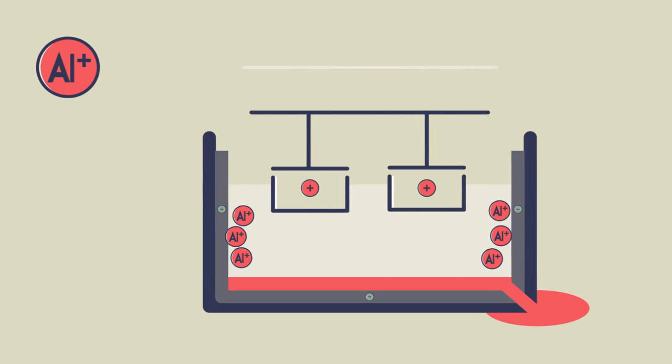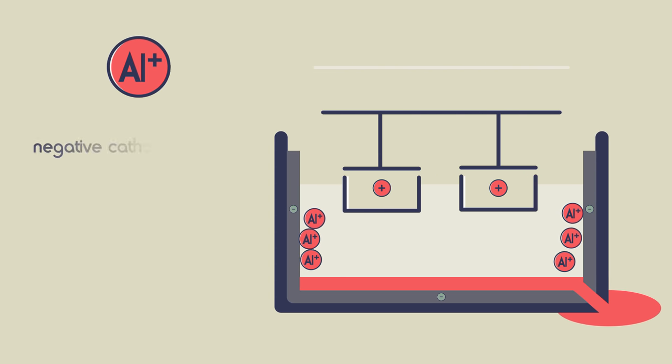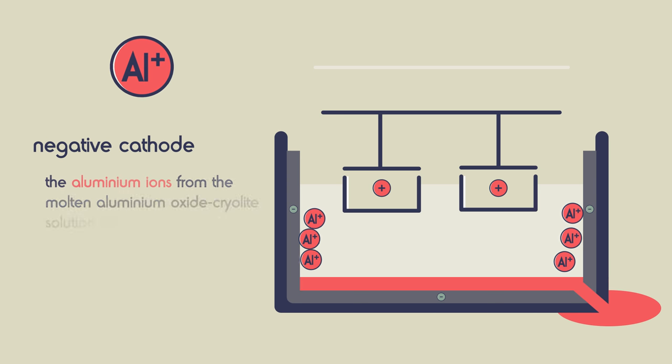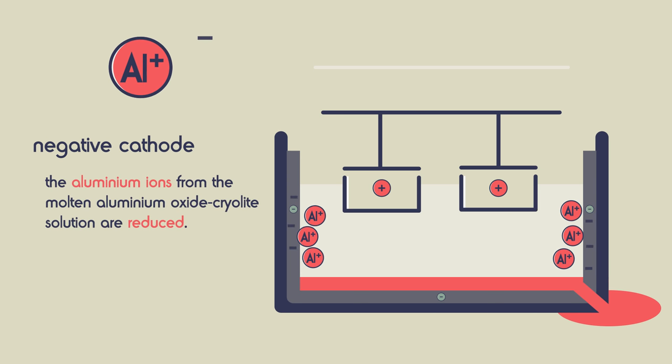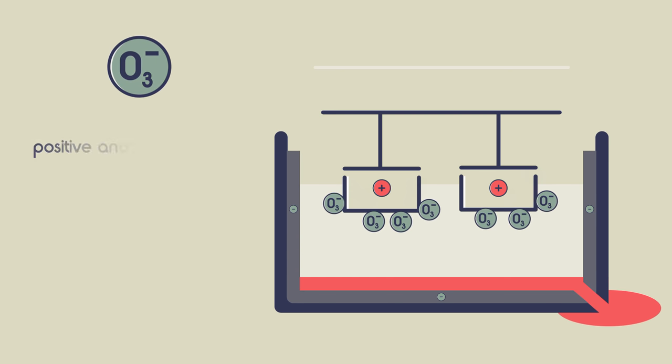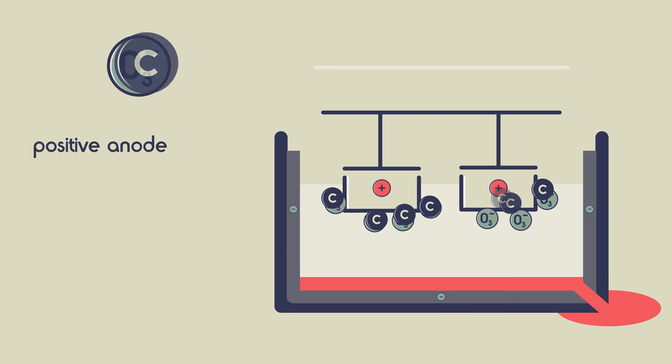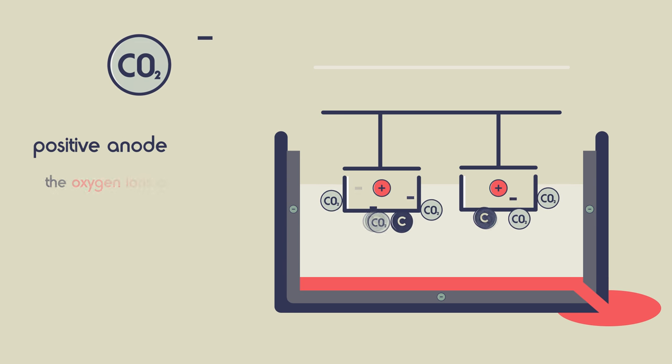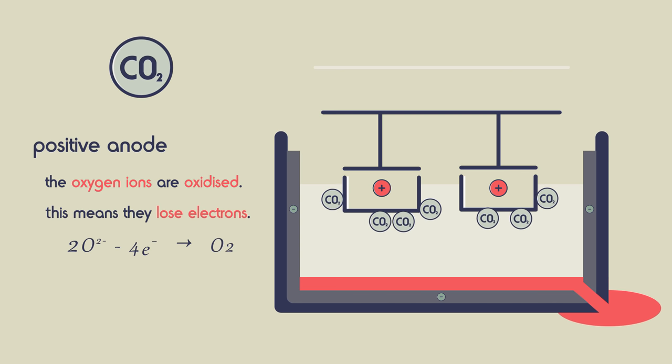Let's have a quick look at the reactions at the electrodes. At the negative cathode where the aluminium forms, the aluminium ions from the molten aluminium oxide cryolite solution are reduced. This means they gain electrons. At the positive anode where the oxygen reacts with carbon to make carbon dioxide, the oxygen ions are oxidised. This means they lose electrons.